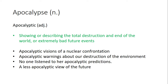The adjective form of apocalypse is apocalyptic, meaning showing or describing the total destruction and end of the world, or extremely bad future events. Examples: Number one, apocalyptic visions of a nuclear confrontation. Number two, apocalyptic warnings about our destruction of the environment. Number three, no one listened to her apocalyptic predictions. Number four, a less apocalyptic view of the future.